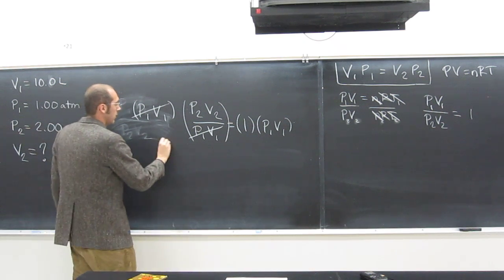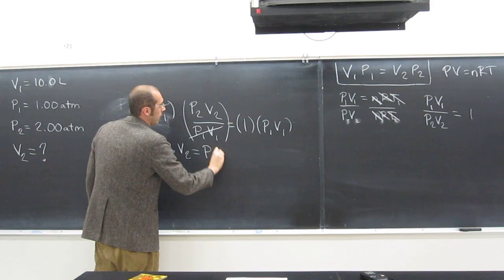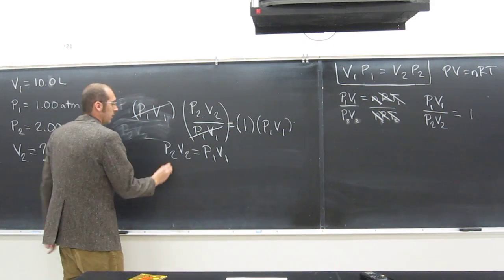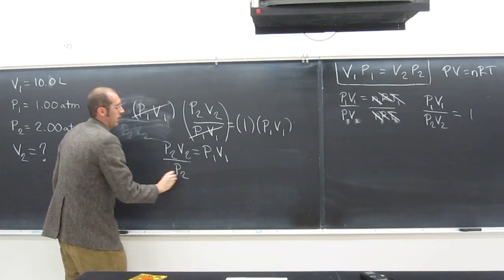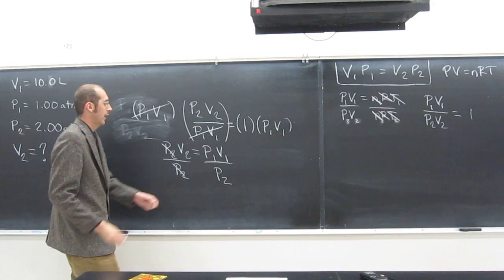And what's my new equation? P2 V2 equals P1 V1. And then divide both sides by P2.